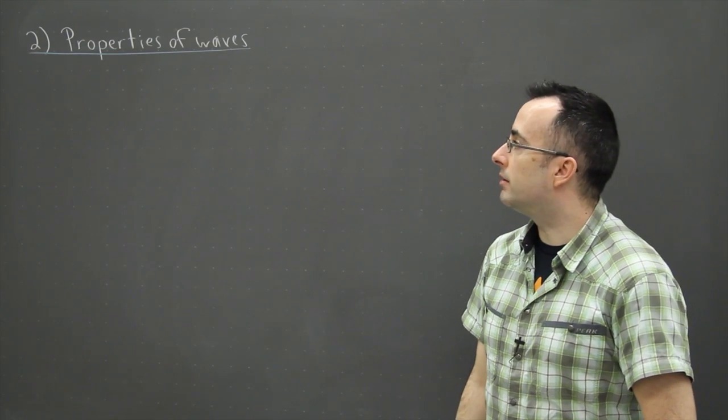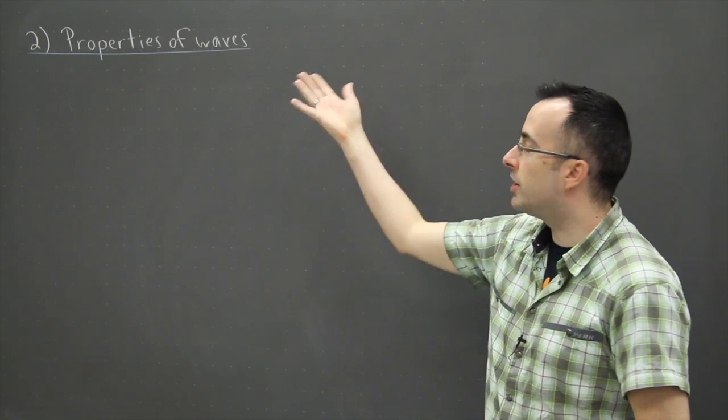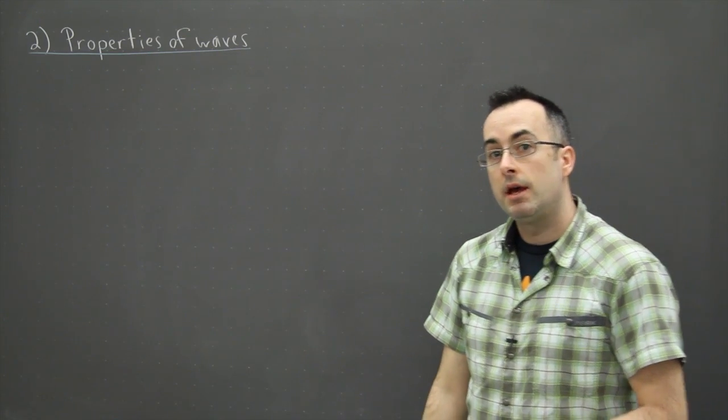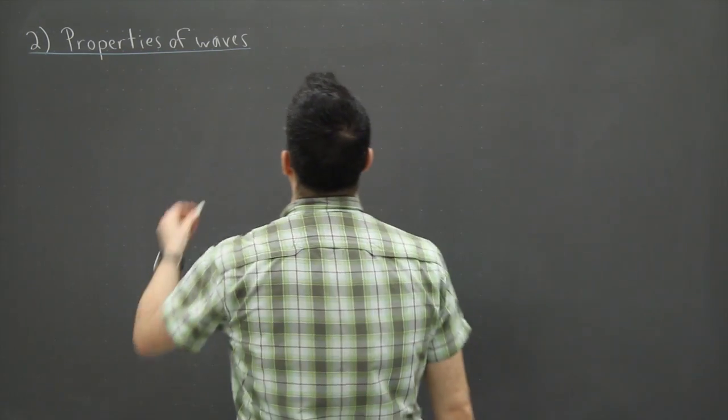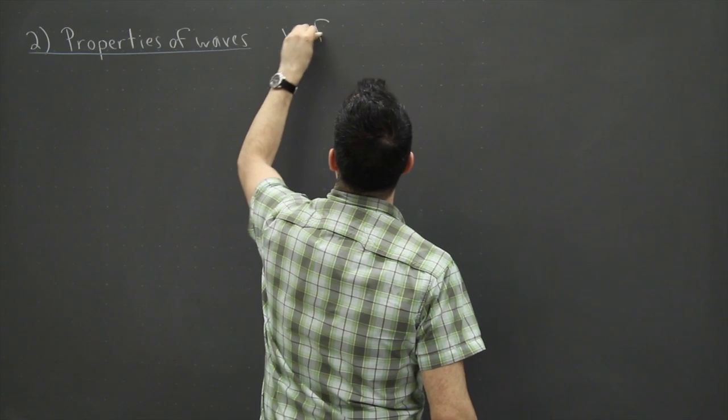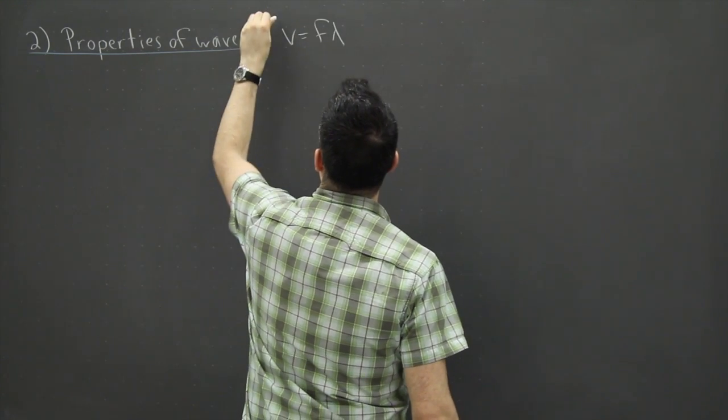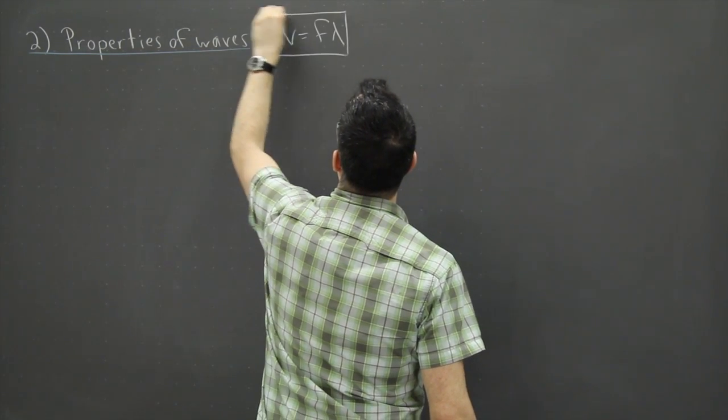The second thing I'd like to talk to you about under waves is general properties of waves. I think the most important equation is this one right here: V equals F lambda. It's in your data booklet so it's extremely important.